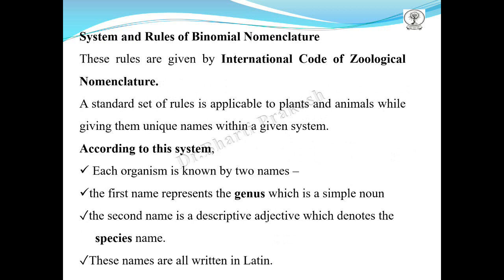He is also regarded as the founder of modern taxonomy. The system and rules of binomial nomenclature are given by the International Code of Zoological Nomenclature — a standard set of rules applicable to both plants and animals when giving them unique names within a given system. According to this system, each organism is known by two names: the first name is a simple noun representing the genus.